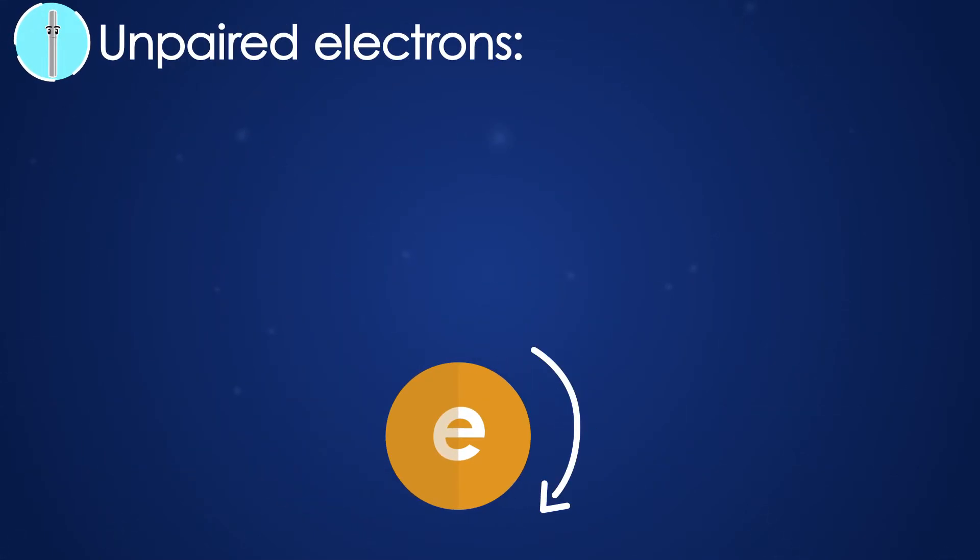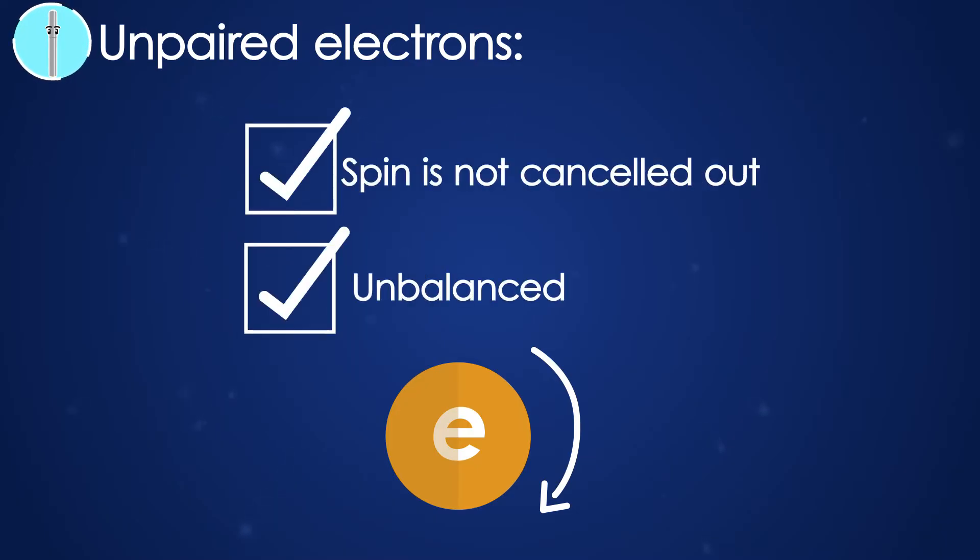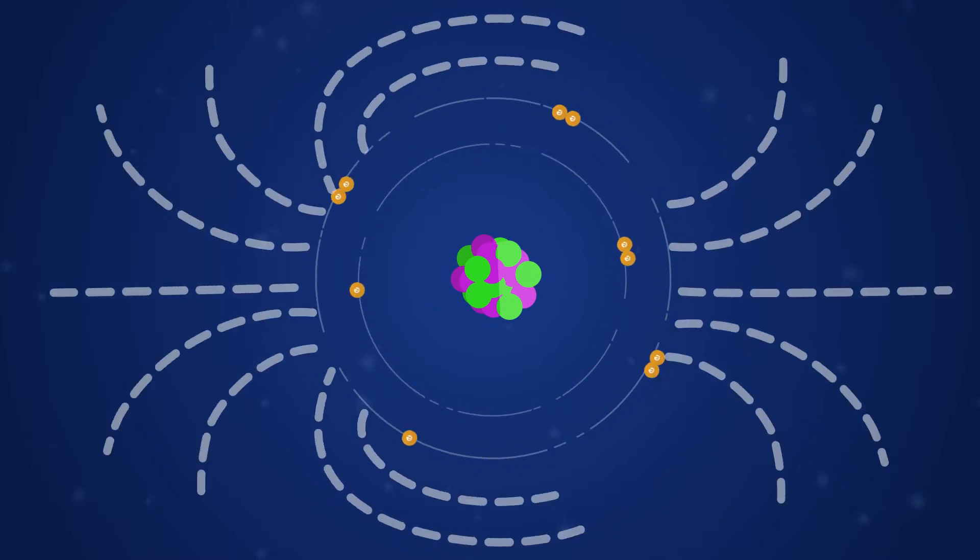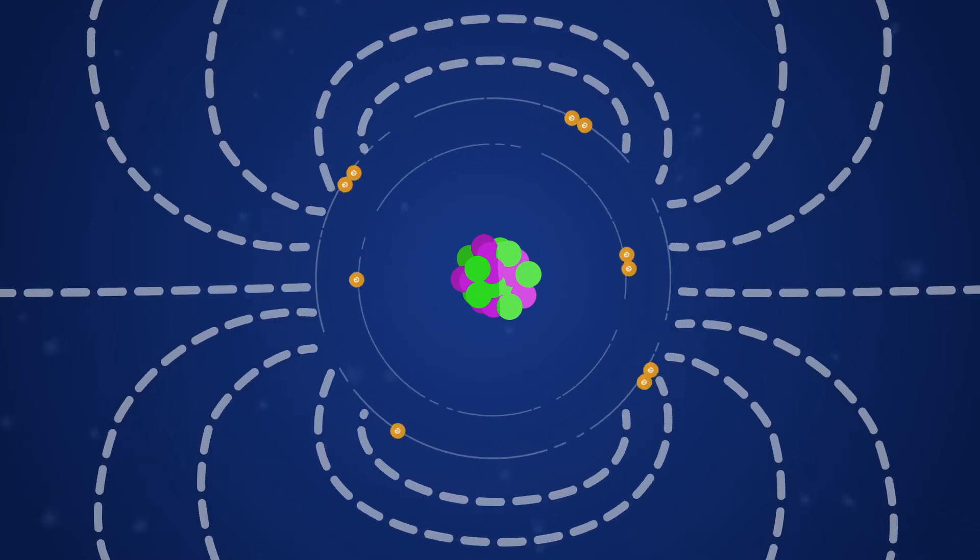But in Rodney's atoms, the electrons are independent, making the spin unbalanced. This minuscule amount of spin is enough to create a magnetic effect called a moment.